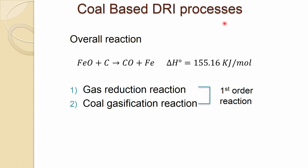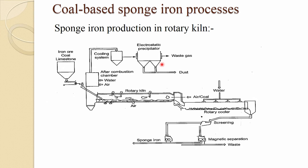For coal-based DRI, the overall reaction involves gas reduction and coal gasification reactions, which are first-order reactions. This produces iron. In the rotary kiln process, such as SLRN, iron ore, coal, and lime are mixed together, forming a composite. These composite pellets are fed through the tube into the rotary kiln.